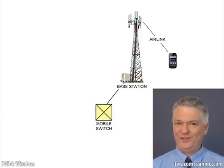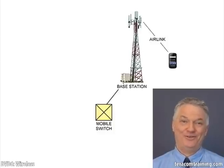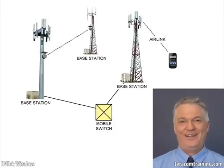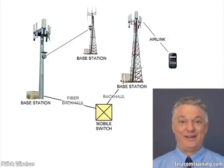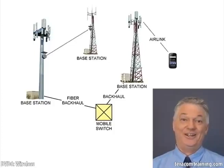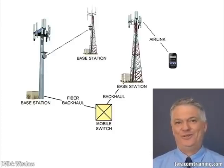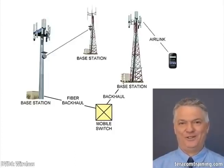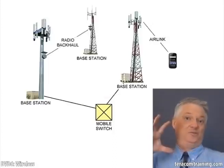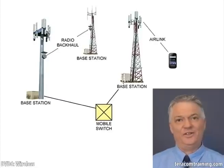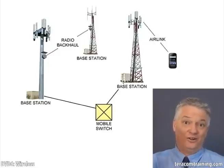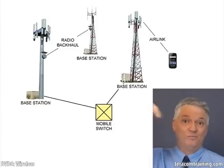The base station has to be connected back to a mobile switch. When we say mobile switch, we don't mean the switch moves around — we mean it's capable of keeping track of users moving around. This connection from the base station back to the mobile switch is called the backhaul. If fiber runs between those two locations and the company is an affiliate of the phone company owning that fiber, they'll use fiber. In many other cases there's no fiber available, so dishes pointed sideways are used — implementing the backhaul with a point-to-point radio link — potentially going through multiple towers before reaching the mobile switch.